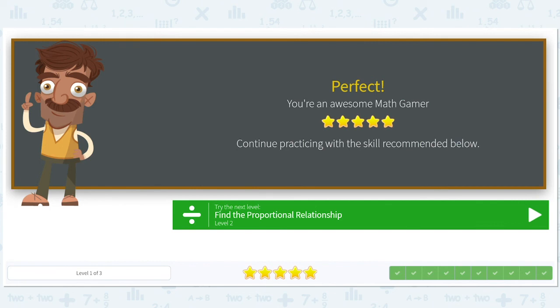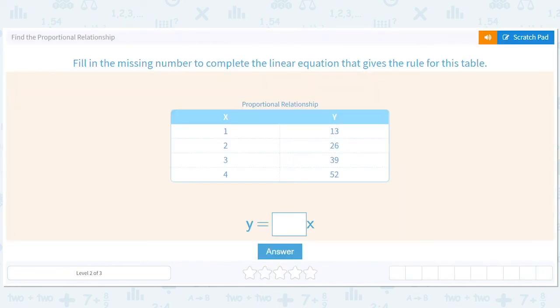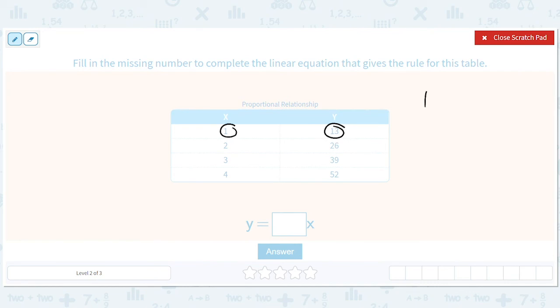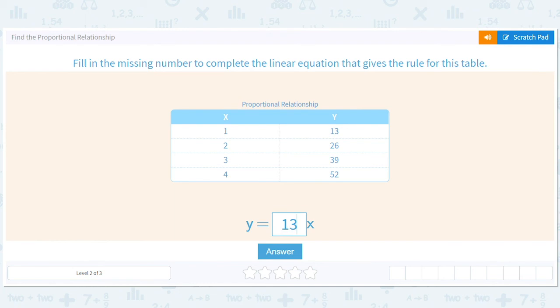Okay. Let's see what we have here. Yeah. So same idea. So 13 divided by 1 is 13. Say, 39 divided by 3 is 13. So y equals 13x.